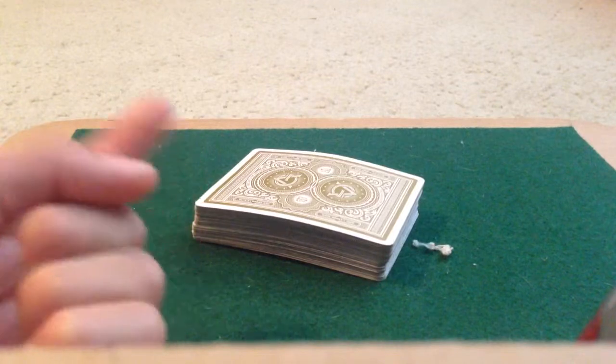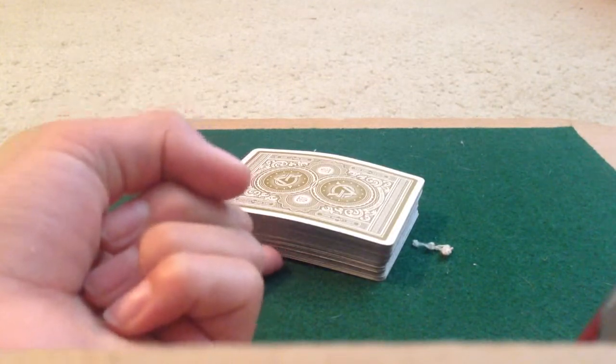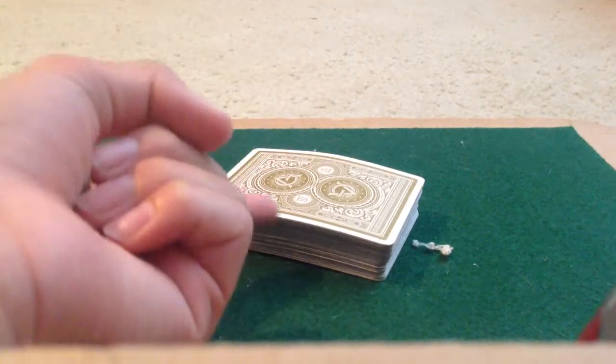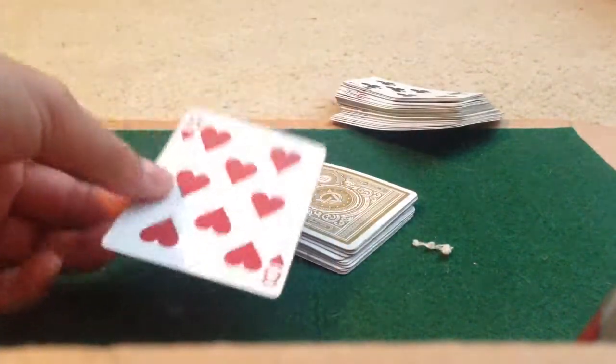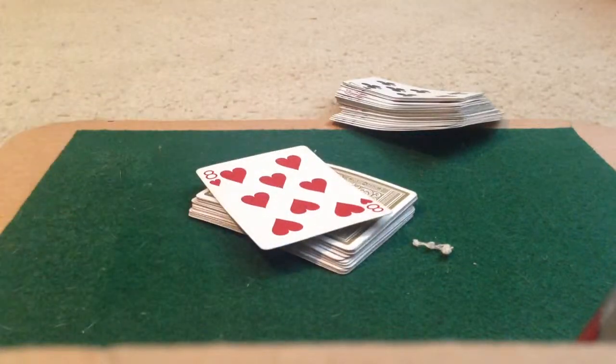onto the table, and have them use their index finger face up at the bottom of the deck and flick wherever they want. It should cut right to their card, the eight of hearts. That's how you do the trick. Thanks for watching.